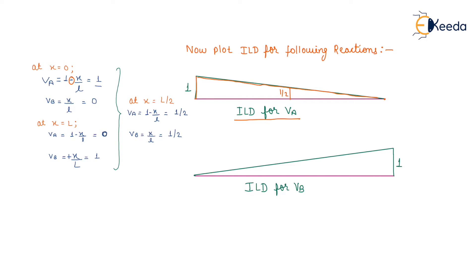For plotting the influence line diagram for support reaction at B: at x equals 0, VB equals 0; at x equals L, VB equals 1; and at x equals L/2, VB equals 1/2. It is a linear equation with a positive slope. So the graph increases from left to right, and that variation is the influence line diagram for support reaction at B.